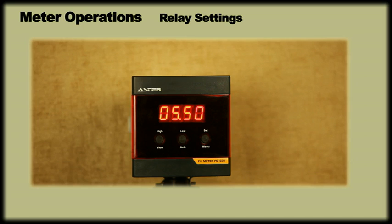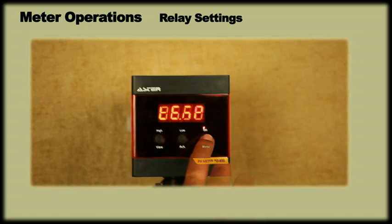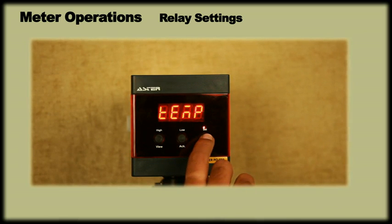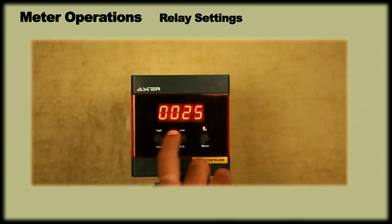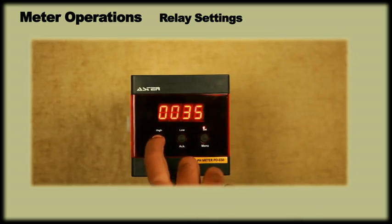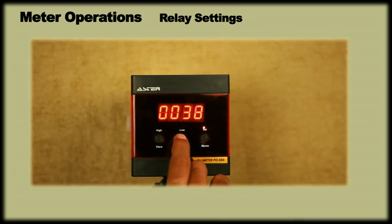Normally hysteresis values are kept at 10%. Finally, the display shows temperature. On pressing the menu key, it will show a previously set temperature value. Using ACK key and view keys, we can set temperature value and press menu to enter and end.